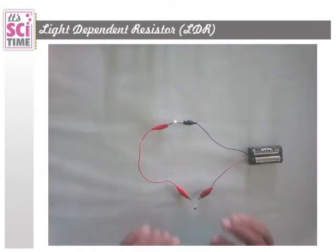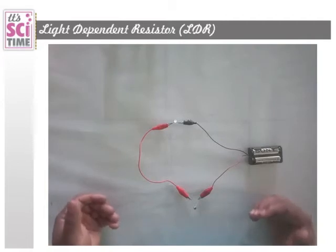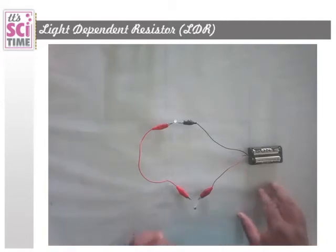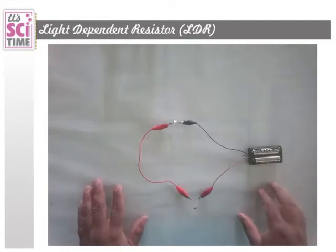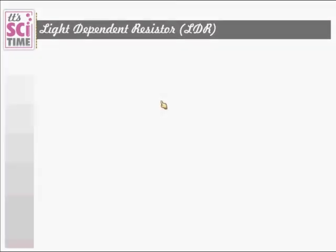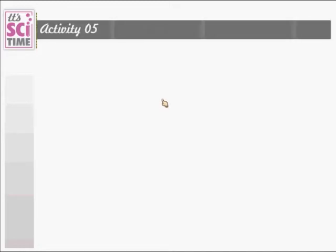Because it is sensitive to light, we call it LDR — Light Dependent Resistor. This is the end of the discussion of current controlling components. Now let's move on to the activities.